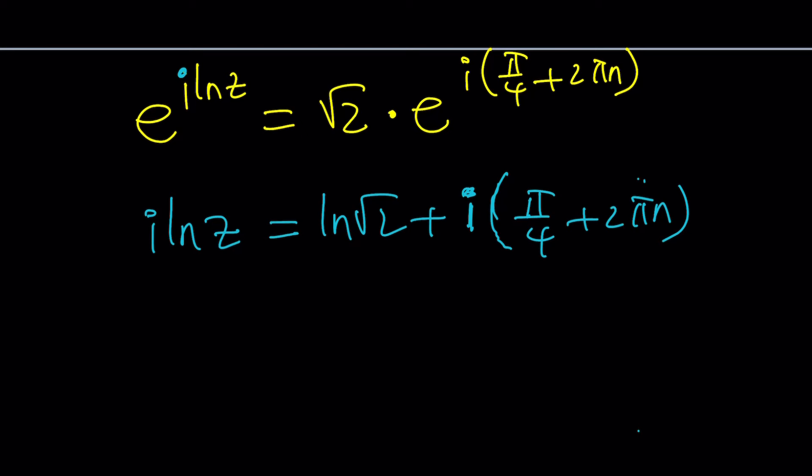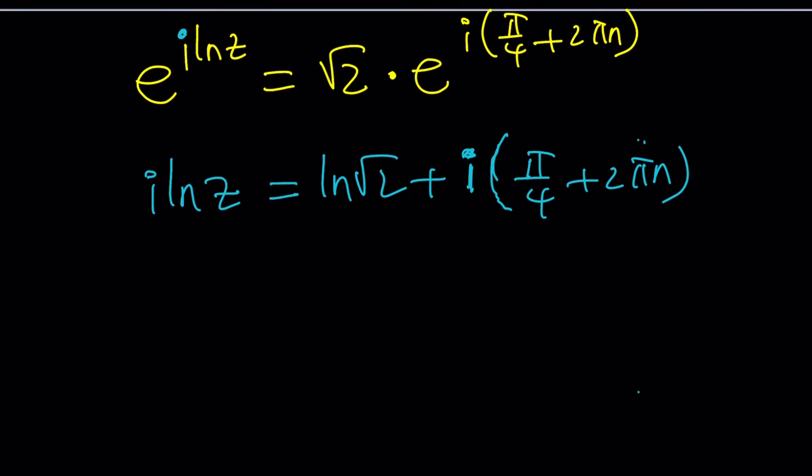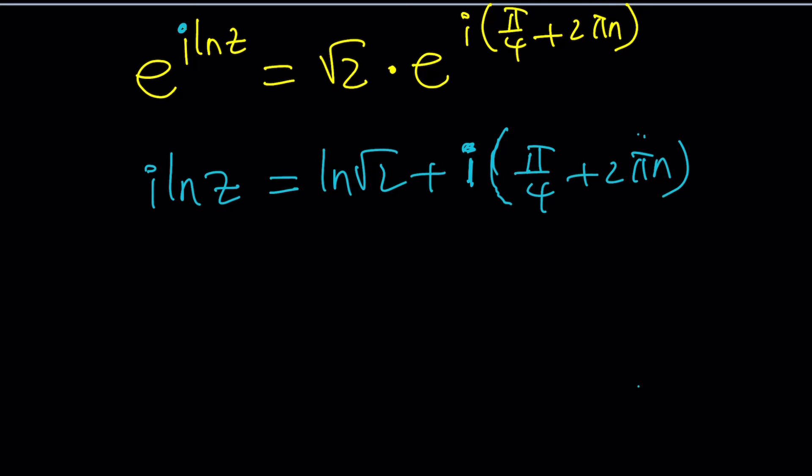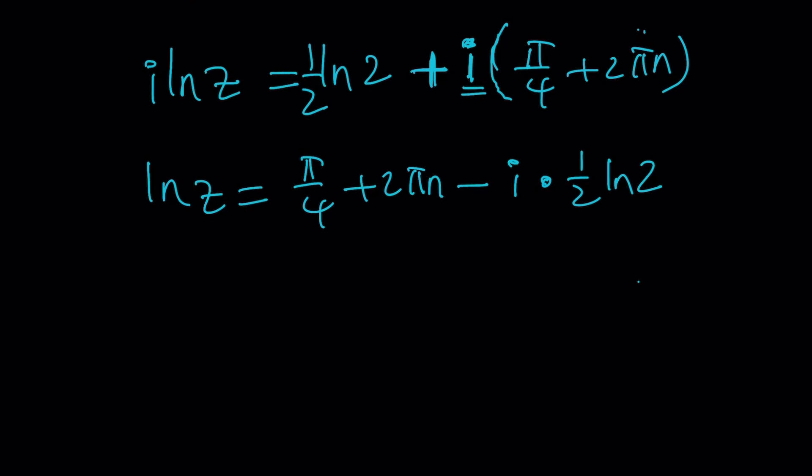Now we're going to go ahead and natural log both sides. When we natural log e to the power something, ln e is 1. So we're going to get the power. ln root 2 plus the power i times pi over 4 plus 2 pi n. So from an exponential, we go to a standard form complex number and vice versa. Our goal is to solve for z. Let's first divide everything by i or multiply by negative i. And notice that ln root 2 is ln 2 to the power 1 half. So I can write this as 1 half ln 2. That's something that I would probably do early on.